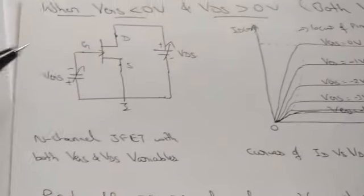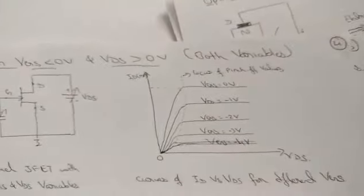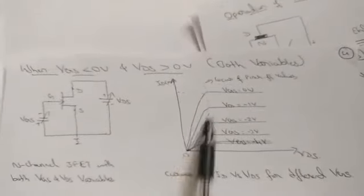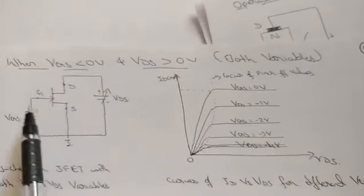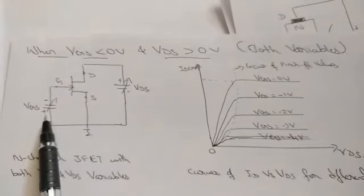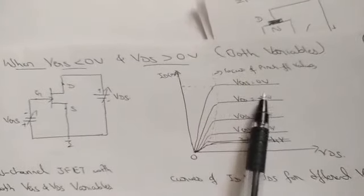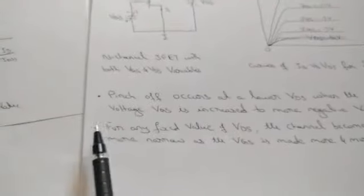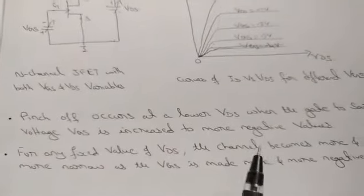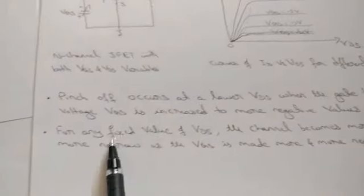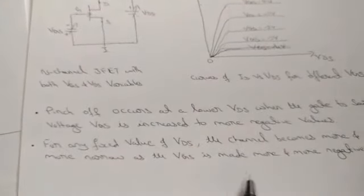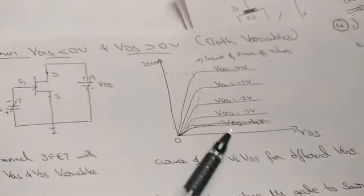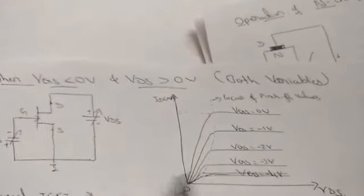The second condition is when both VGS and VDS are variable. As VGS is varied — at zero volts, minus one, minus two, and minus four — different current levels are obtained. Pinch-off occurs at a lower VDS when the gate-to-source voltage VGS is increased to more negative values. For any fixed VDS, the channel becomes more and more narrow as VGS becomes more negative.